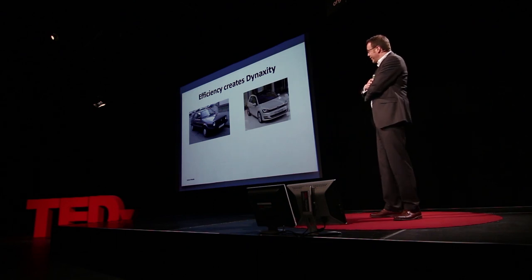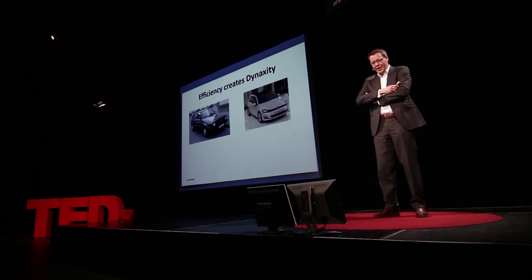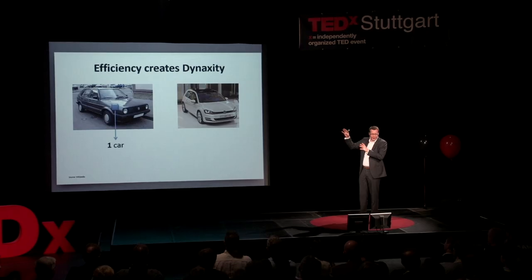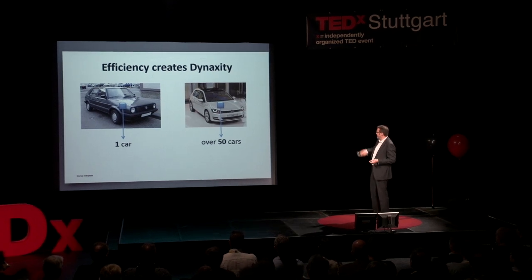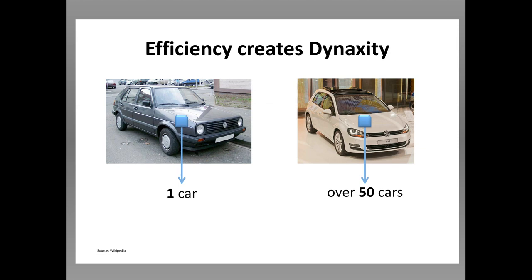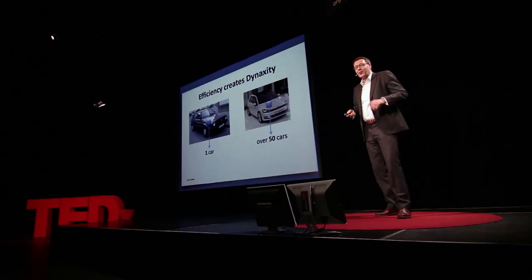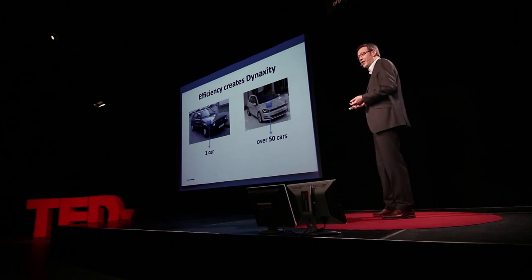The left car is my first car — a Golf 2. When there was a part inside that car, it was used only in that one car. Today, if we take a Golf 7, one part can be used in about 50 different types of cars. The simplicity of having only one part creates danaxity on the other side — processes, design, and decision-making become much more complex. So efficiency is a driver for danaxity.